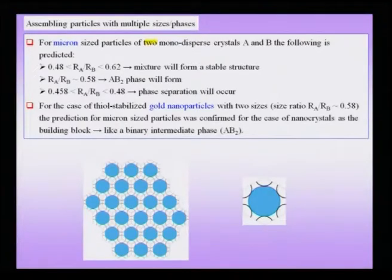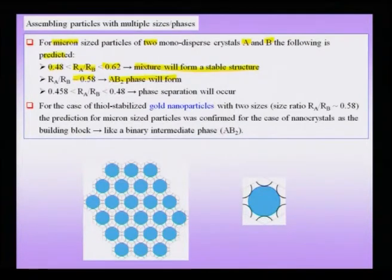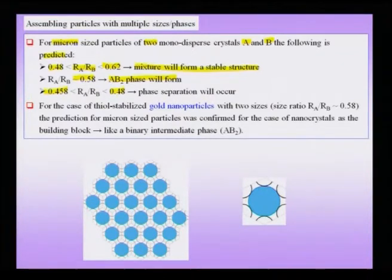Let us continue with the discussion of self-assembled ordered nanostructures, assembling particles with multiple sizes or phases. For micron-size particles, two sizes labeled A and B were studied. It was predicted that for a size ratio R_A/R_B in the range of 0.48 to 0.62, the mixture will form a stable structure. If the size ratio is close to 0.58, an AB₂ phase forms. For a size ratio between 0.458 and 0.48, phase separation will occur.